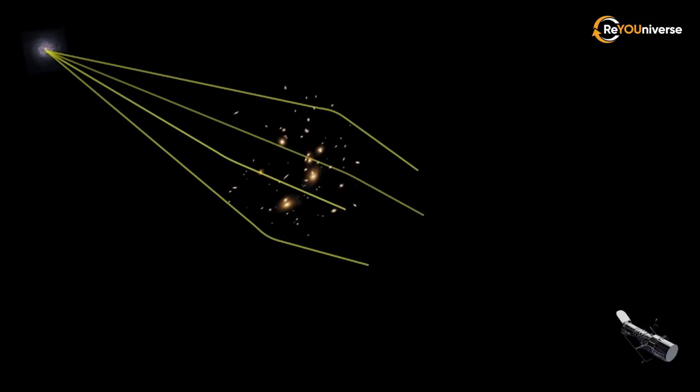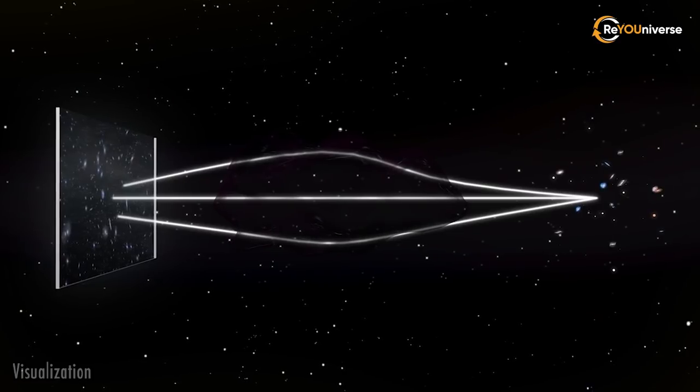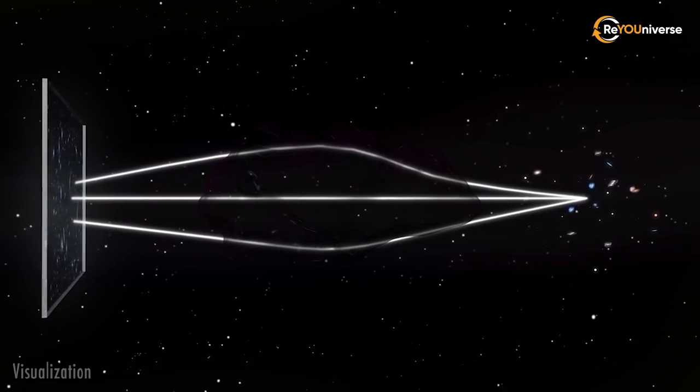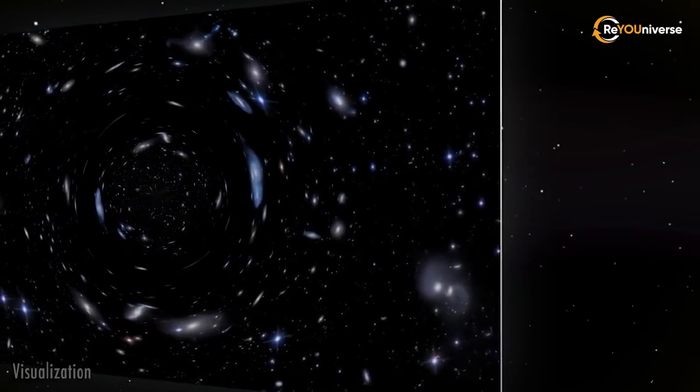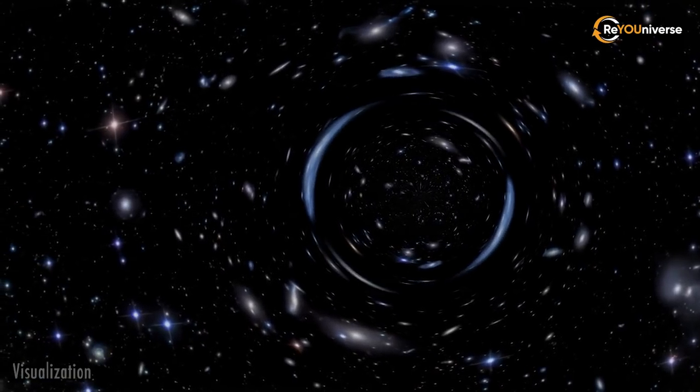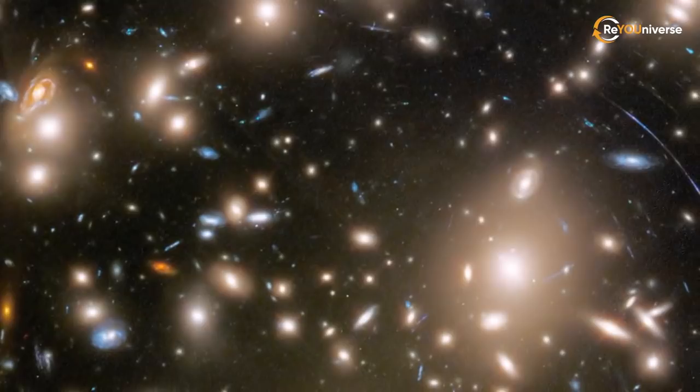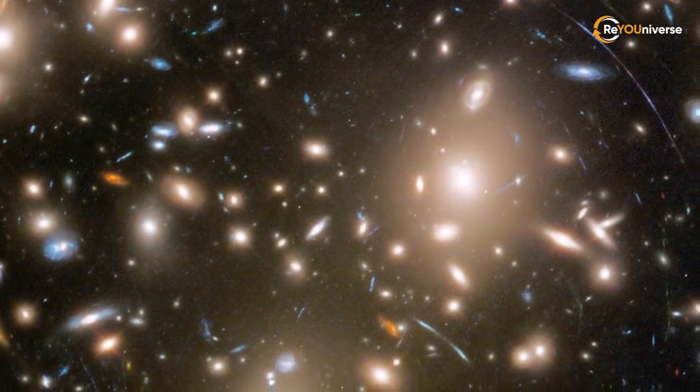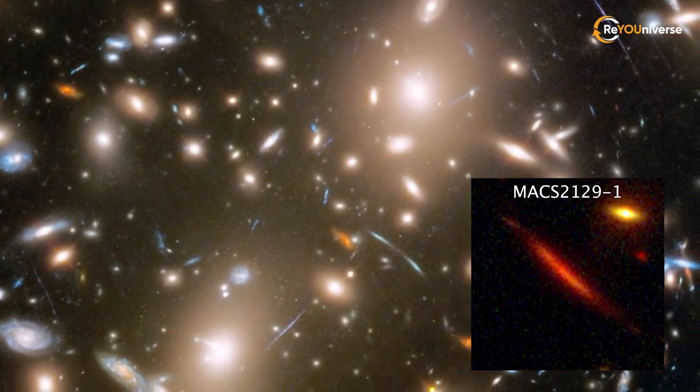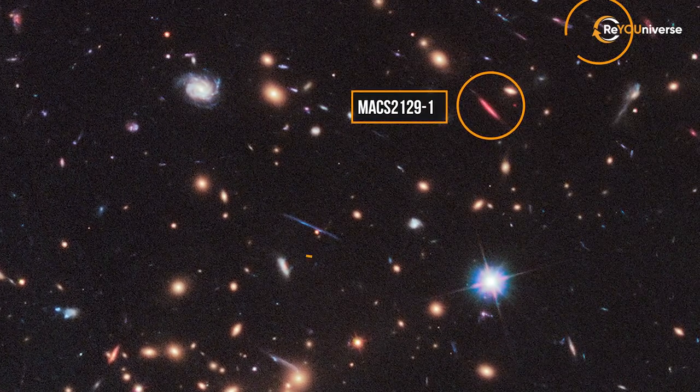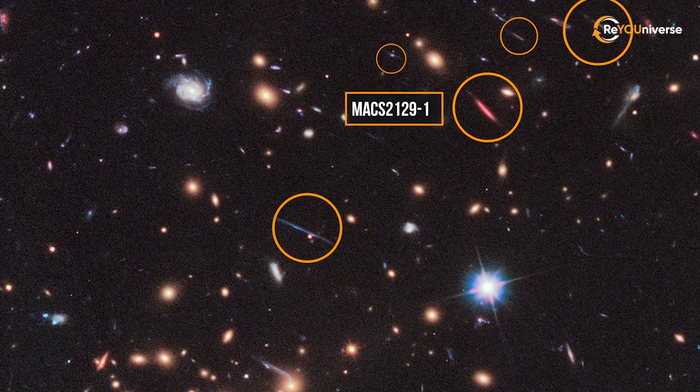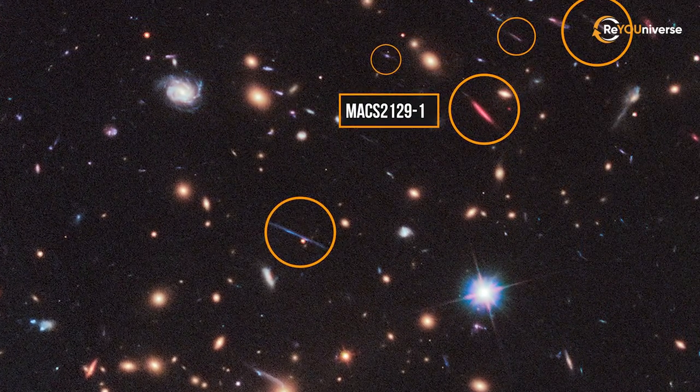Before reaching us, the light from the MACS-2129-1 galaxy passes through a specific zone where this effect takes place. Therefore, the galaxy looks brighter than it should, and its shape is greatly distorted. Other galaxies nearby are clearly visible, but are blurred and distorted in the same way.